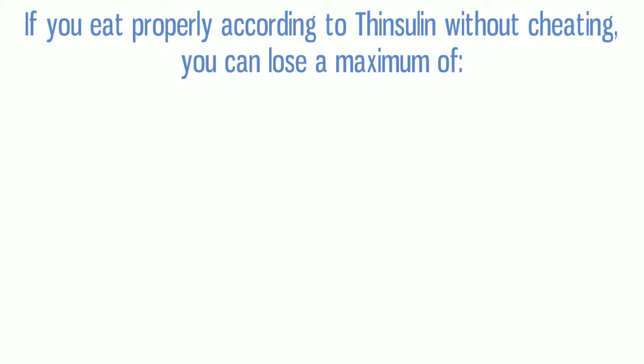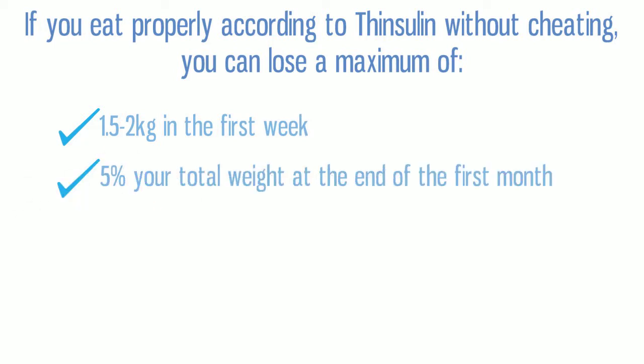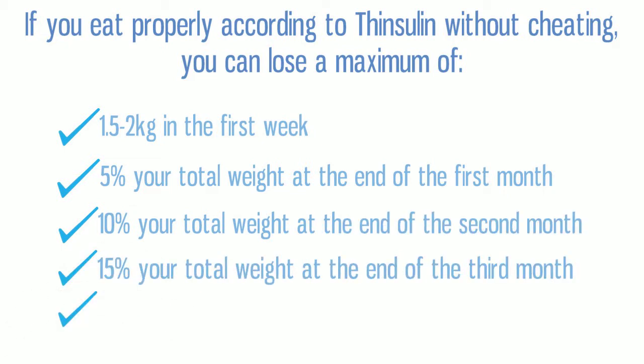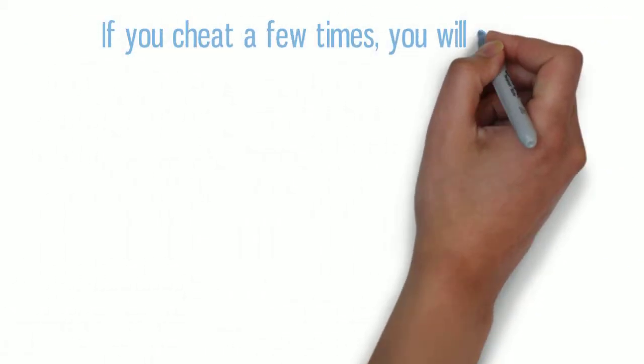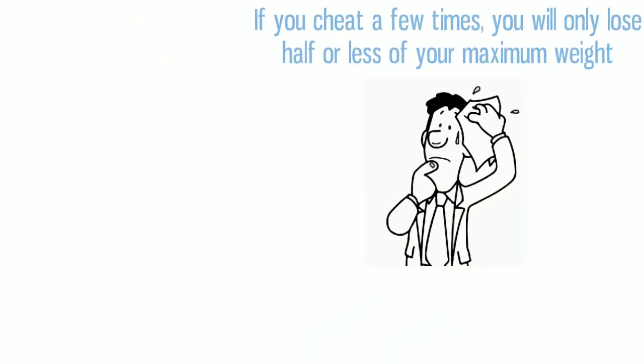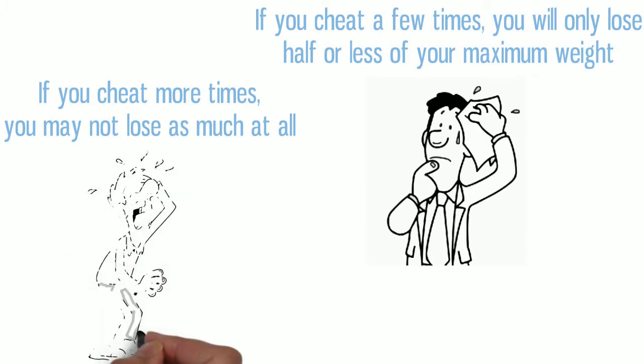If you follow Thinsulin without cheating, you can expect to lose a maximum of 1.5 to 2 kg in the first week, 5% of your total weight at the end of your first month, 10% at the end of your second month, 15% by the end of your third month, and 20% by the end of your fourth month. But if you cheat a few times here and there, you may lose a little bit, or if you cheat too many times, you may not lose much at all. So it's important not to cheat.